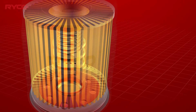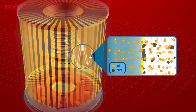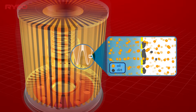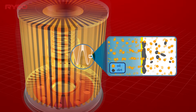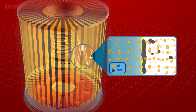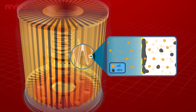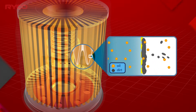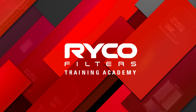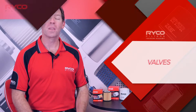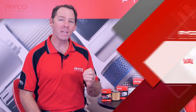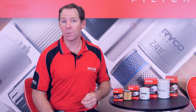Trapped particles and contaminants accumulate in the media over a period of time, eventually reducing the filter's flow and leading to the need for replacement. The filter has a major requirement of not stopping or interrupting the oil flow, and this need is met using valve technology.